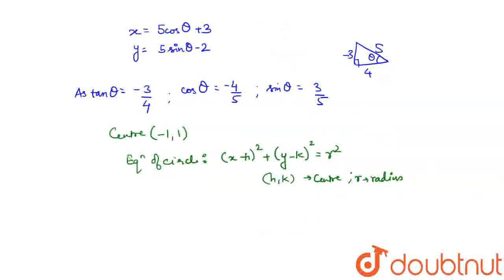So the equation would become x plus 1 whole square, these are the center coordinates, plus y minus 1 whole square is equal to r square, which is 5. Radius 5 is given in the question, so it would be 25.